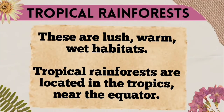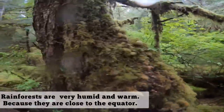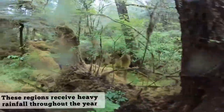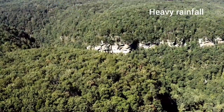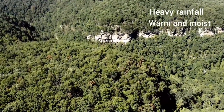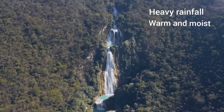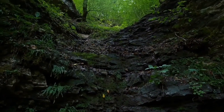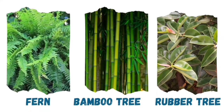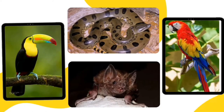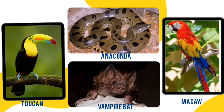Tropical rainforests are warm and wet habitats. These are located in the tropics near the equator. These regions receive heavy rainfall throughout the year. Around half of the world's plant and animal species live in the tropical rainforest. Examples of organisms found in tropical rainforests are fern, bamboo tree, rubber tree, anaconda, toucan, macaw and vampire bat.